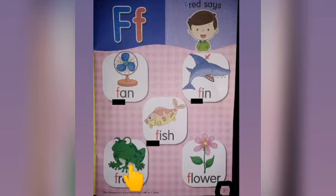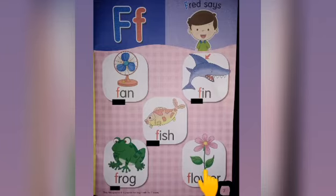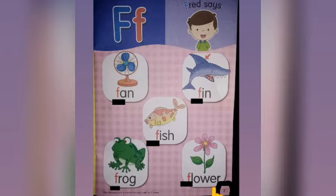Children, now look at this picture. What picture is this? This is a picture of a frog. What is the beginning sound of frog? You are right! Now let's read: frog, frog, frog. And look at the last picture — this is a picture of a flower. What is the beginning sound of flower? Yes, you are right! Now let's read: flower, flower, flower.